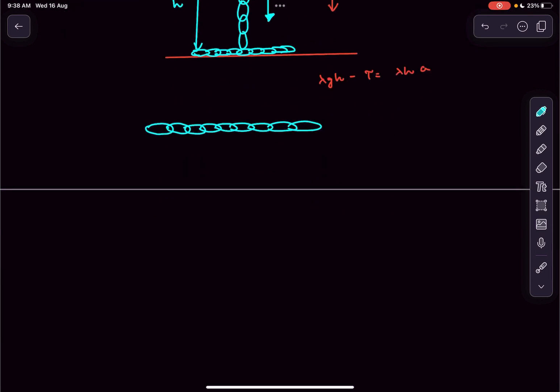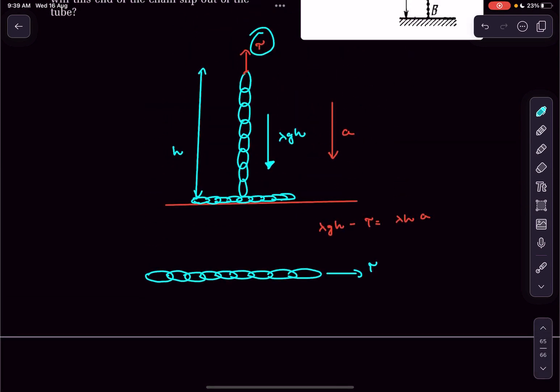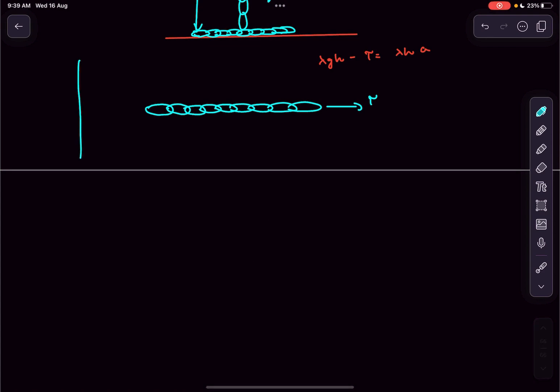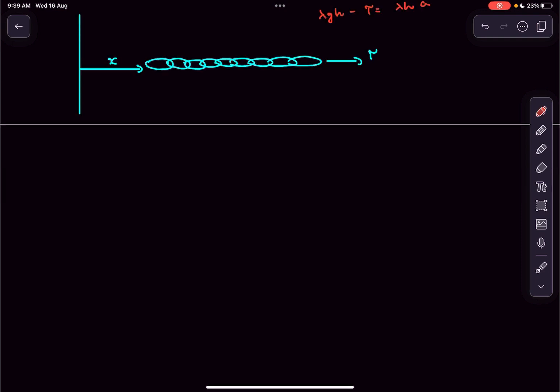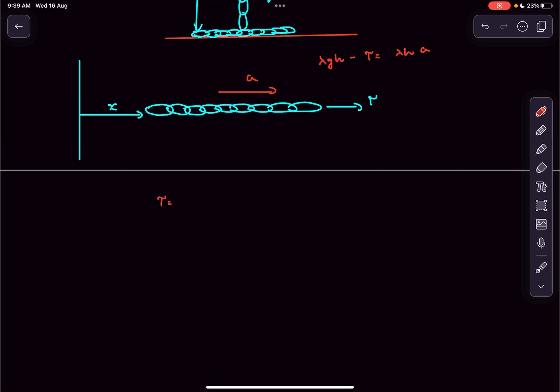Now let's draw the FVD of the horizontal part of the chain. This same T force will act on the horizontal part. Let's say the chain initially was here and traveled a distance x after time t. This part of the chain will also be accelerated by amount a. Writing F = ma for this, we get T equals the mass times a.